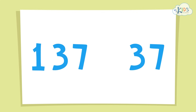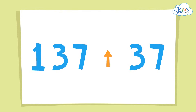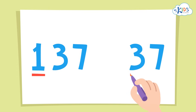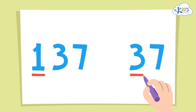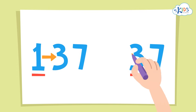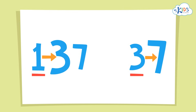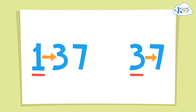When we want to round a number to the nearest ten or hundred, we have to look at the place to the right to help you decide whether to round up or down. I like to underline the place I'm rounding to and draw an arrow to the place that will tell me whether to round up or down. You always look one place to the right of the place that you want to round to.